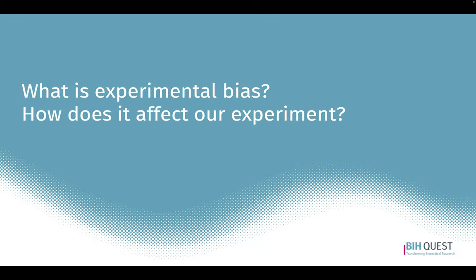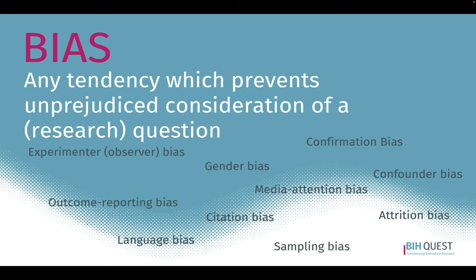Let's talk first about what experimental bias is and how it affects our experiments. Bias is any tendency which prevents unbiased consideration of a research question. Several biases may occur — these are not all that exist but pretty relevant ones. Some you may know, like gender bias or language bias in reporting. Others may be less obvious, for instance outcome reporting bias, where you only report outcomes that fit your narrative and omit others in your publication.